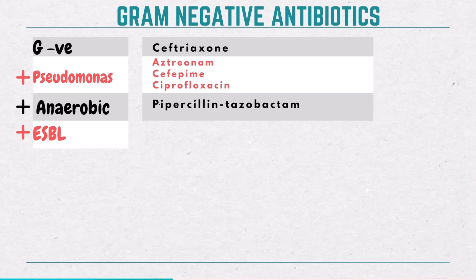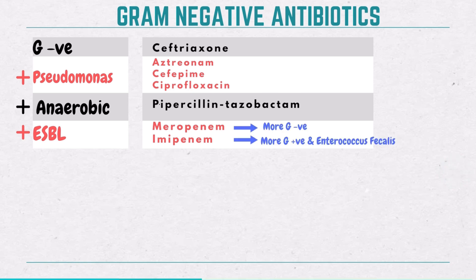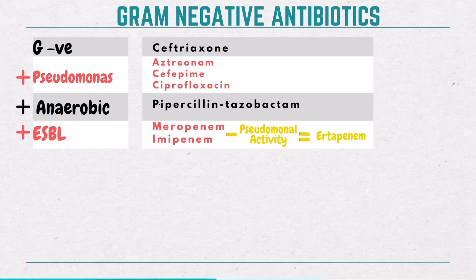Next up, what about ESBL-producing bacteria? These are tough bugs, but we've got two carbapenems to save the day. Meropenem — stronger against gram-negatives. Imipenem — works better against gram-positives, including Enterococcus faecalis. And here's a fun fact: take away the pseudomonal coverage from these two carbapenems and you get ertapenem.